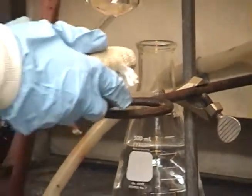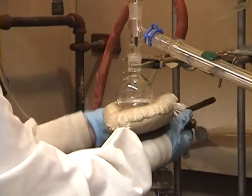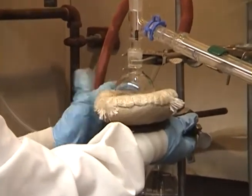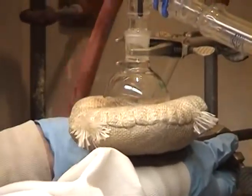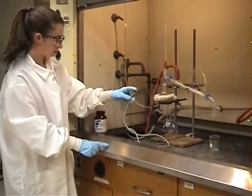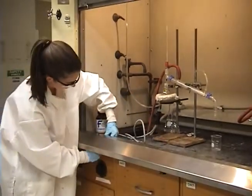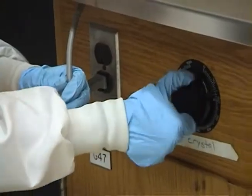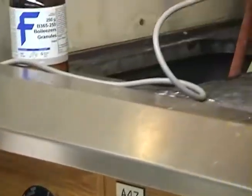An iron ring is used to support the heating mantle, which is moved upward to snugly cup the round bottom flask. The cord of the heating mantle is tucked under the ledge of the hood and then plugged into the outlet under the ledge, where it can be controlled by the variac dial.